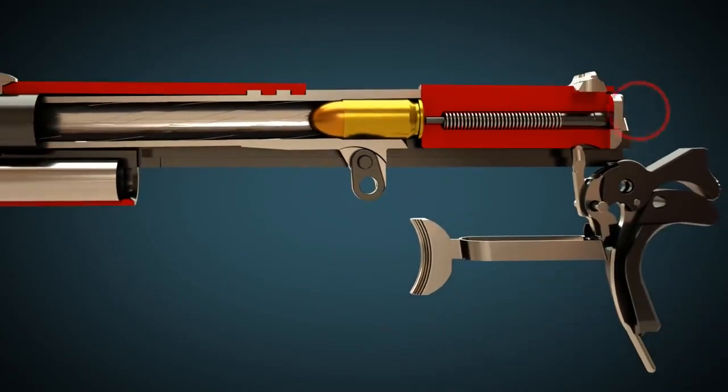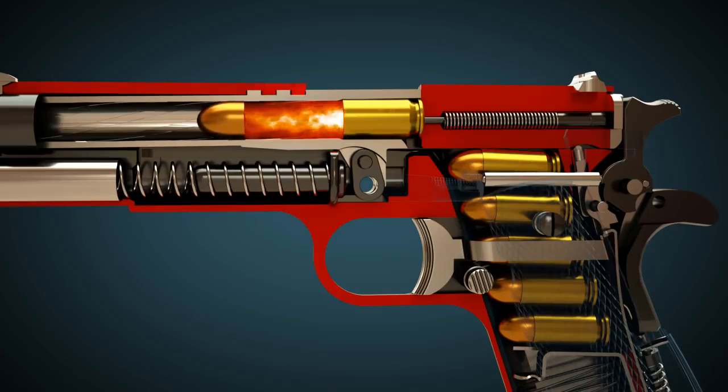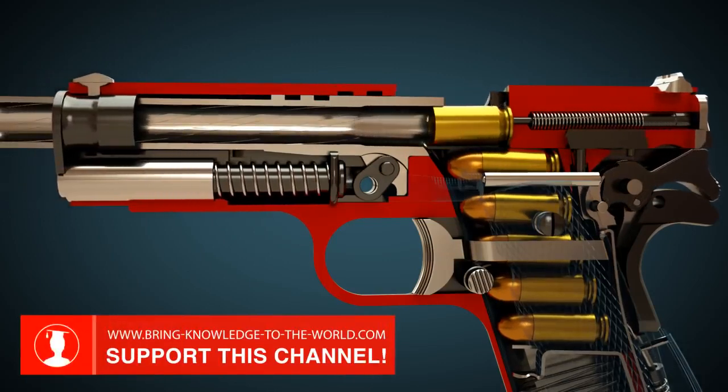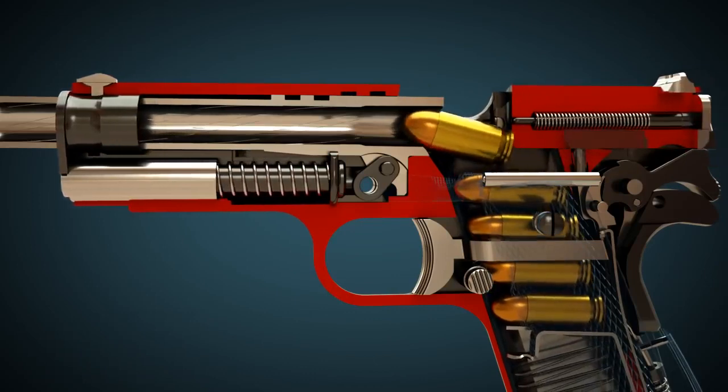Once again from a different camera perspective. After the propellant has been ignited, the projectile moves forward and the slide is pushed back by the pressure. Consequently, the case is ejected and a new cartridge is fed into the barrel. The hammer is automatically cocked.